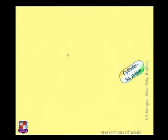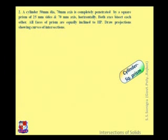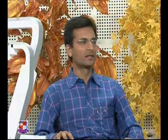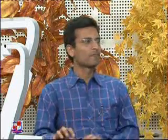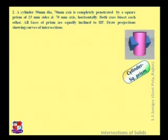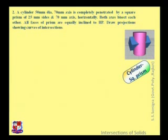The second problem we discuss is about a cylinder and a square prism. The data is: a cylinder 50 mm diameter, 70 mm axis is completely penetrated by a square prism of 25 mm sides and 70 mm axis horizontally. Both axes bisect each other and all faces of the prism are equally inclined to HP. Draw the projections. This is the isometric view of the given condition.